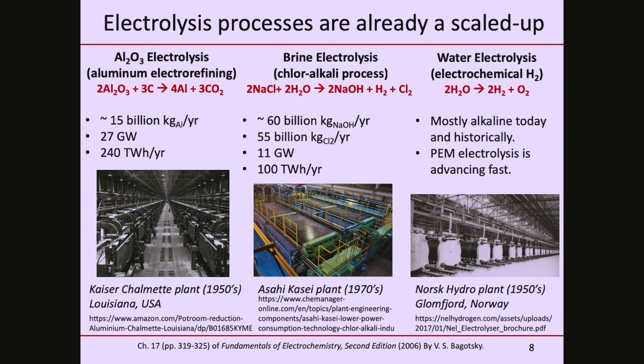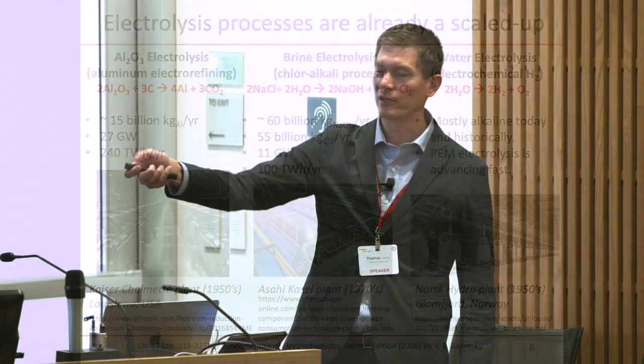One common misconception is that electron-driven or electrochemical processes don't scale well. But that's actually a misconception. If you pick up an aluminum soda can, that aluminum is made by electrochemical processes — we crank out about 15 billion kilograms a year of aluminum globally, using 27 gigawatts of electricity, typically run by hydro. The chloroalkali process is another example: sodium hydroxide and chlorine, 60 billion kilograms a year — precursors used in soap, detergents, PVC piping, and more.